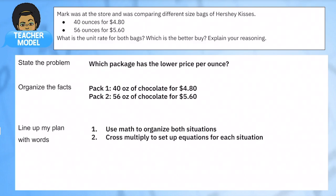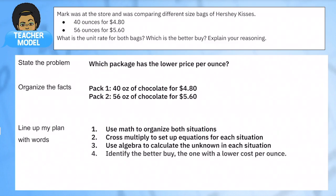Here's our plan. First I'm going to use math to organize both situations. Then I'm going to cross multiply to set up equations for both situations, and then I'm going to use algebra to calculate the unknown. The unknown we're looking for is unit rate. We want to make sure we know what the unit rate is for every ounce of chocolate.